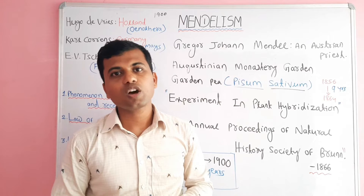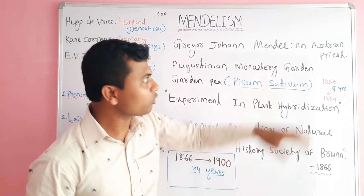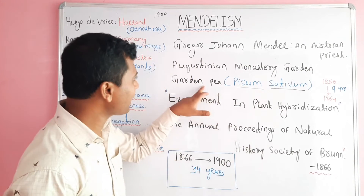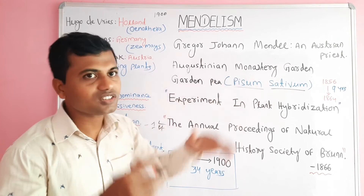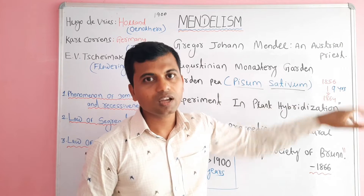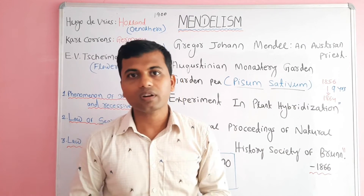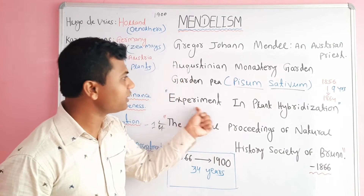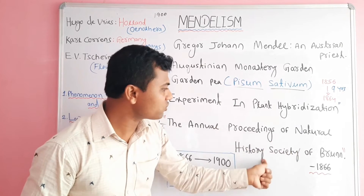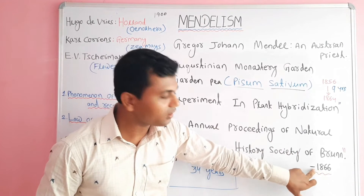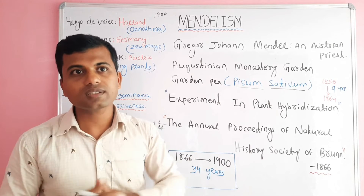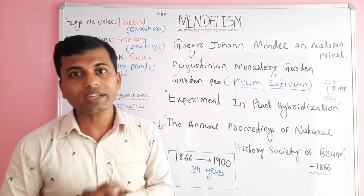The principle of inheritance proposed by Mendel is called Mendelism. An Austrian priest, Gregor John Mendel, conducted a historical experiment on Garden Pea, Pisum sativum, in the Augustinian Monastery Garden from 1856 to 1864, for about 9 years. By analyzing his results, he published a paper titled 'Experiment in Plant Hybridization' in a journal named 'The Proceedings of Natural History Society of Brünn' in the year 1866. From 1866 to 1900, for about 34 years, Mendel's work was unnoticed by the scientific world.